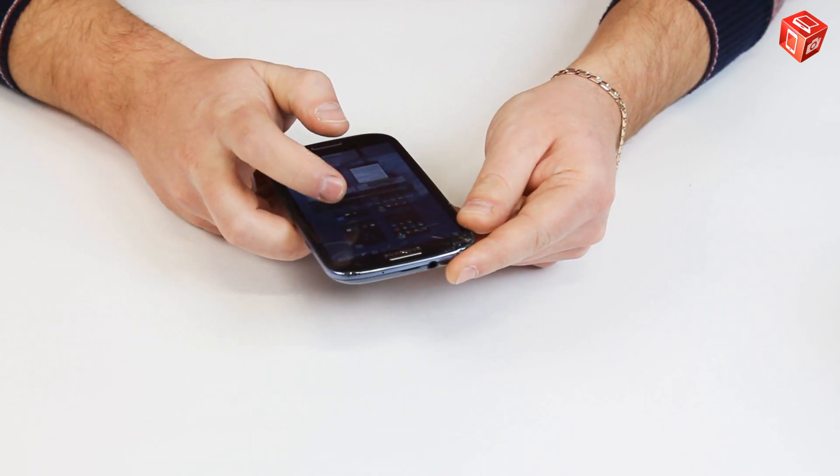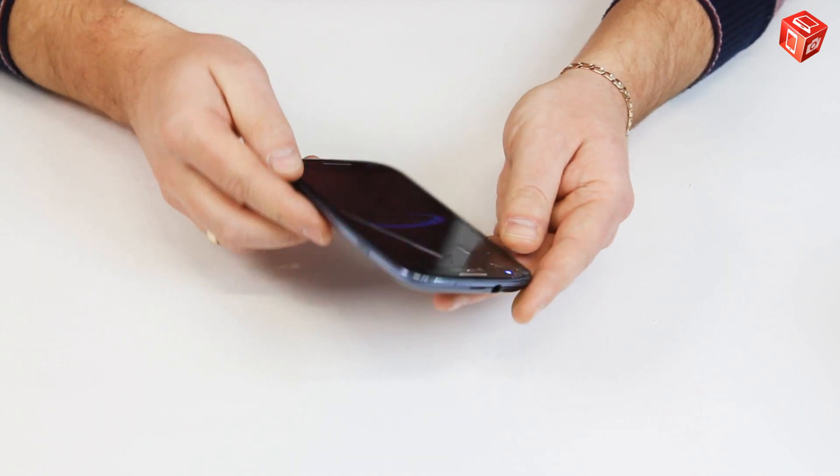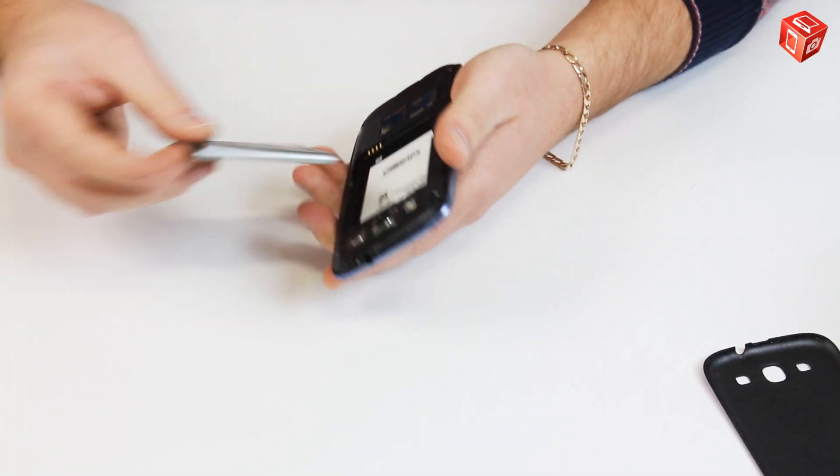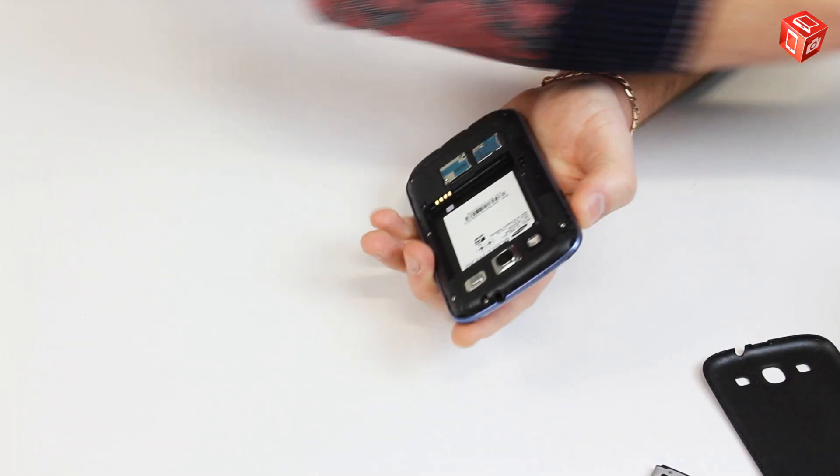We are going to replace the glass. Let's start disassembling the phone. Remove the back cover, take out the battery and unscrew the phone.